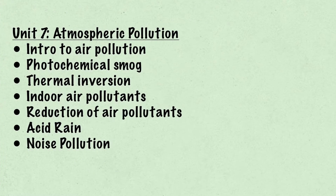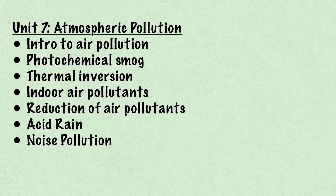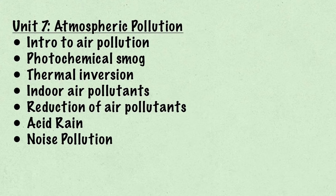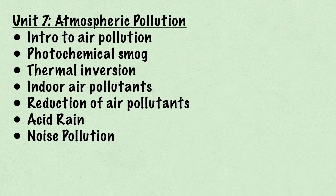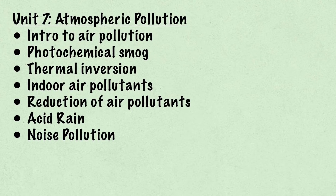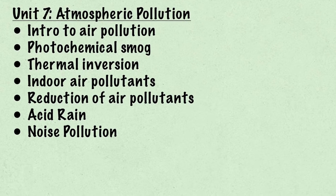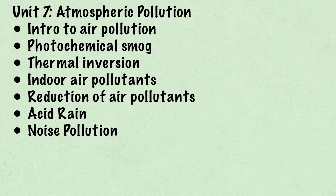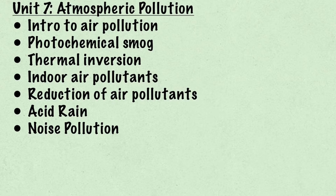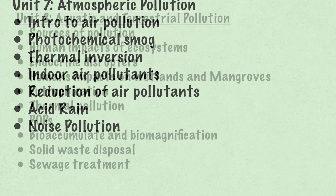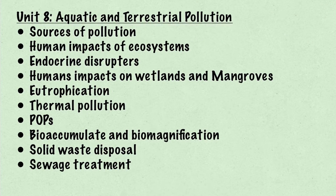Unit 7 is about atmospheric pollution and teaches us about the introduction to air pollution, photochemical smog, thermal inversion, indoor air pollutants, reduction of air pollutants, acid rain, and finally noise pollution.